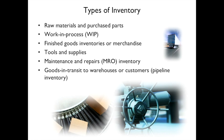Supplies work the same way. You have an inventory of towels, an inventory of glue, nails, whatever it is that you have. And then maintenance and repair inventory — if you have machinery, you might keep some spare parts for that machinery in inventory. And then goods in transit to warehouses or customers — this is called pipeline inventory.